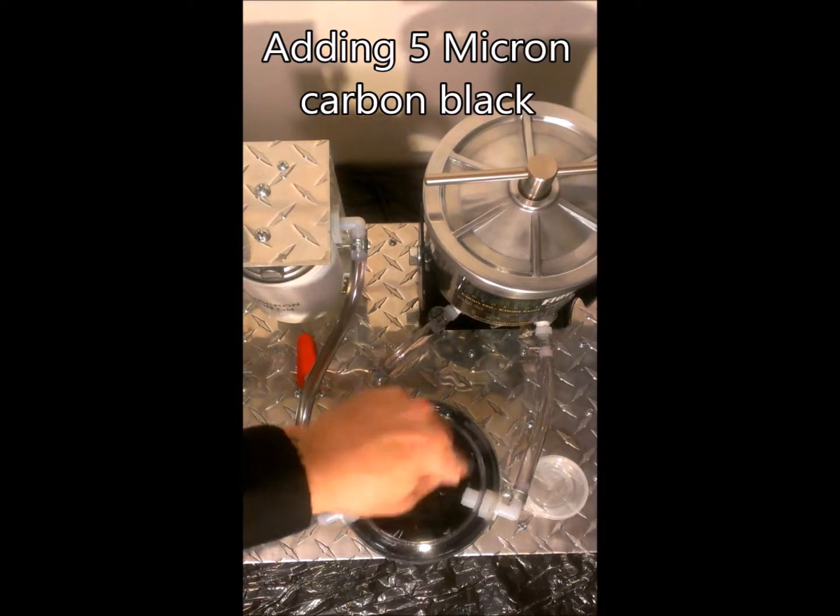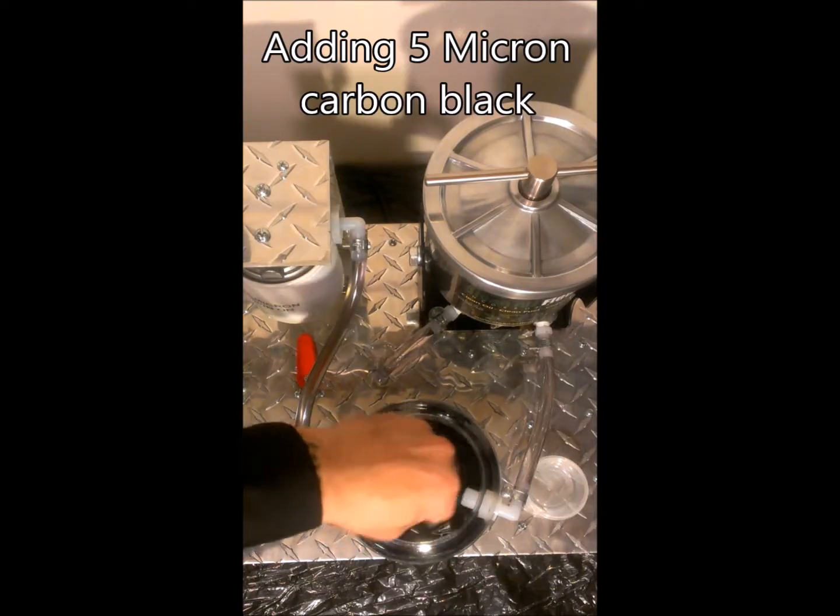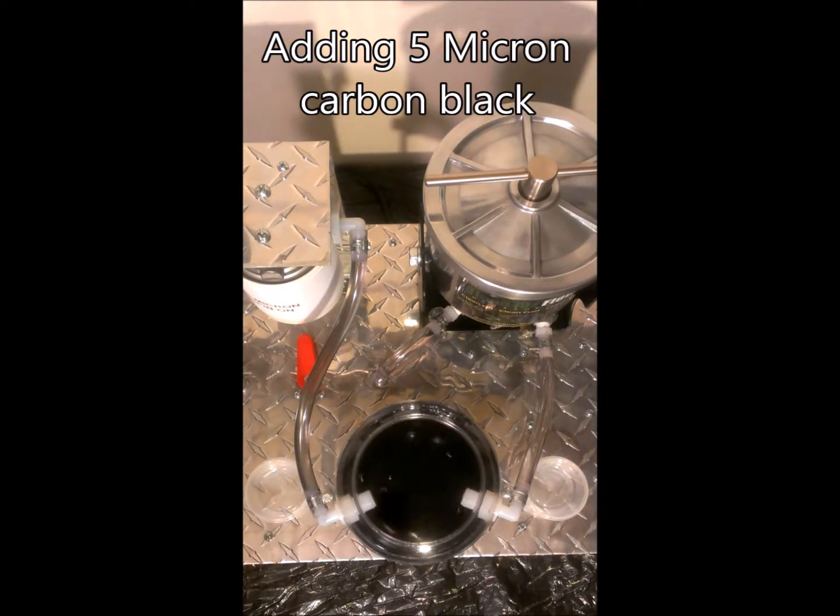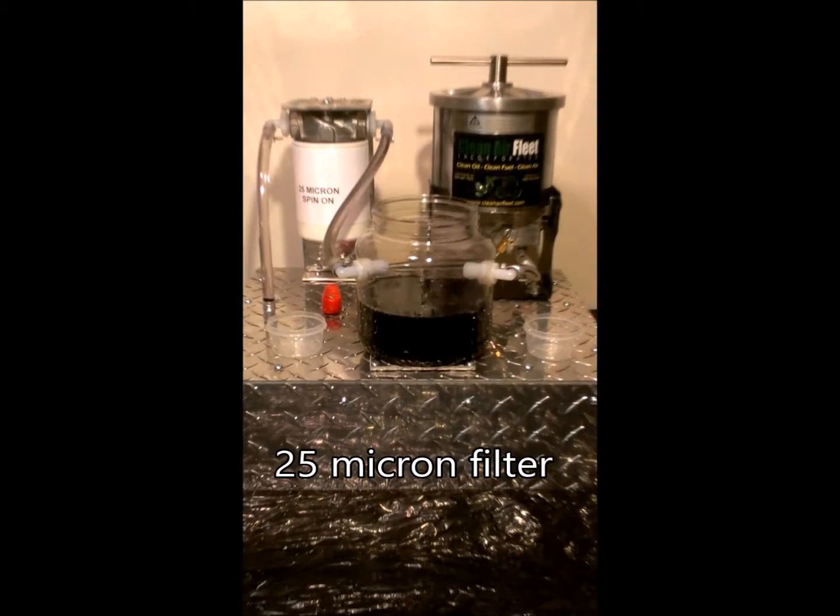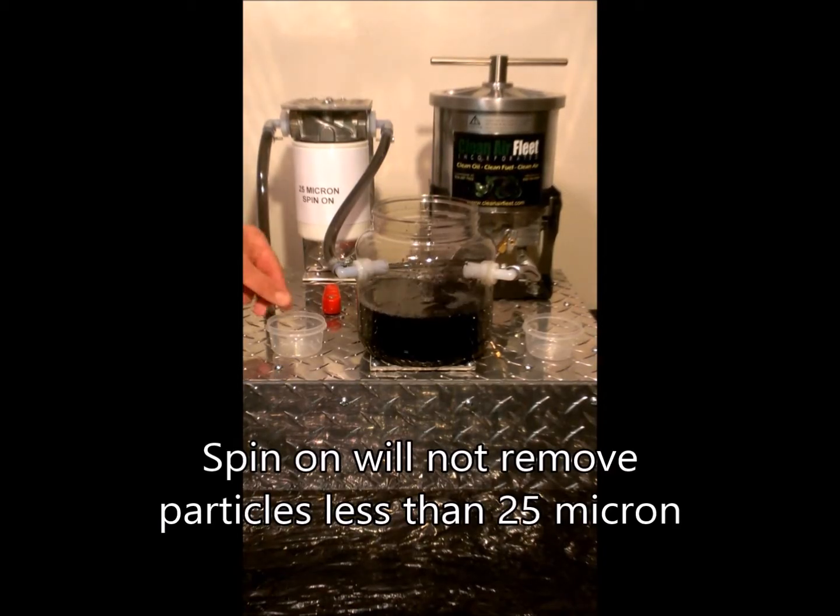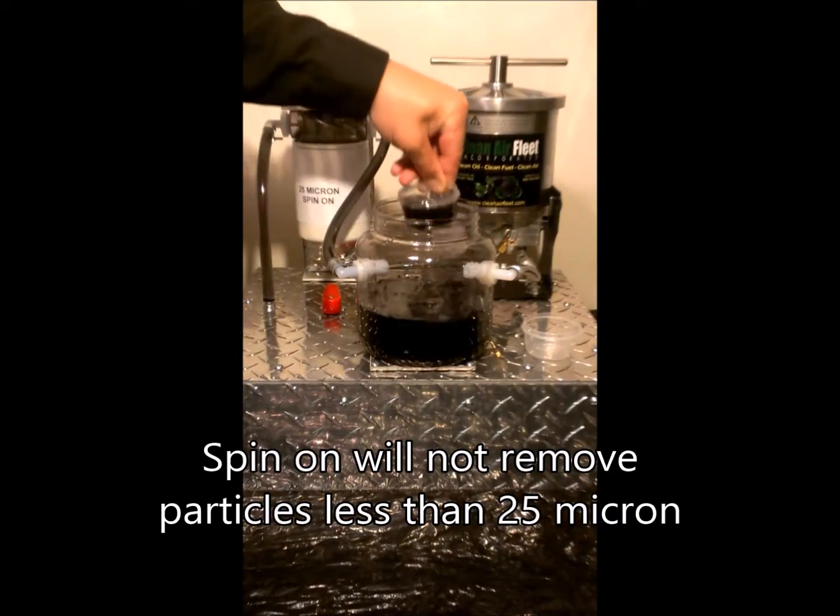Next, you will see how the 25 micron spin-on is not capable of removing any of the black. Now we will pump the oil through the 25 micron filter. See the carbon in the oil coming out still black? The spin-on will not remove particles less than 25 micron from the oil.